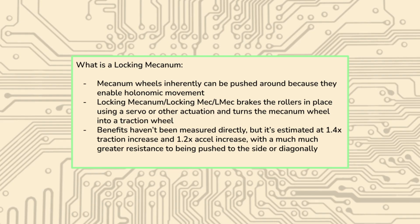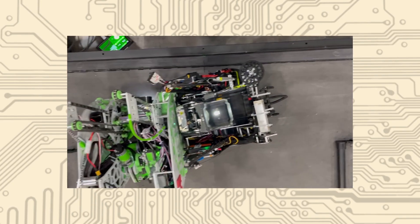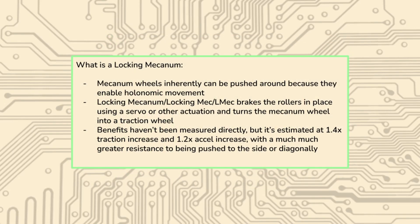Locking Mecanum is taking a Mecanum wheel and looking at its biggest flaw in defense, which is that you can push a Mecanum wheel directly to the side pretty easily compared to a full-on traction wheel, and this is very evident when bots are playing defense on each other on the field.